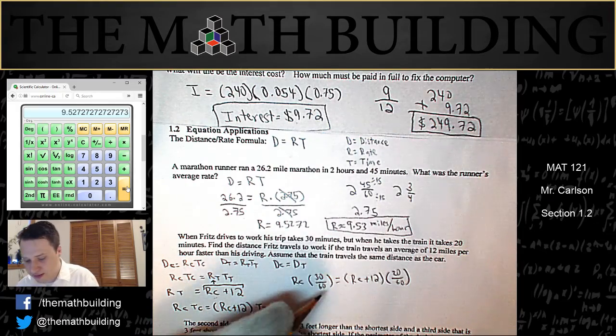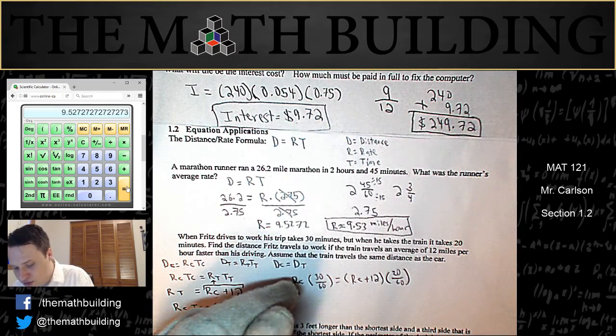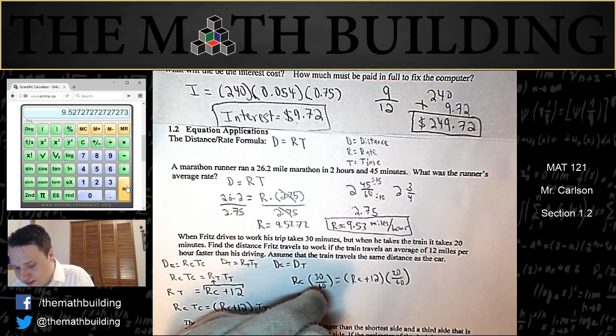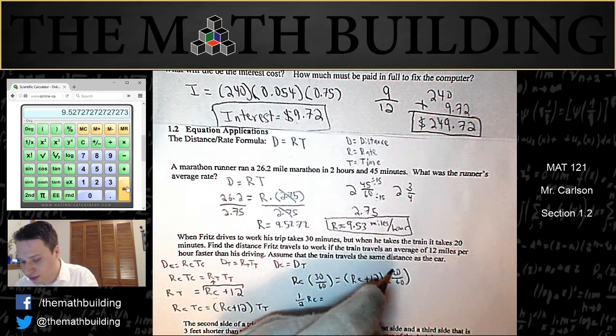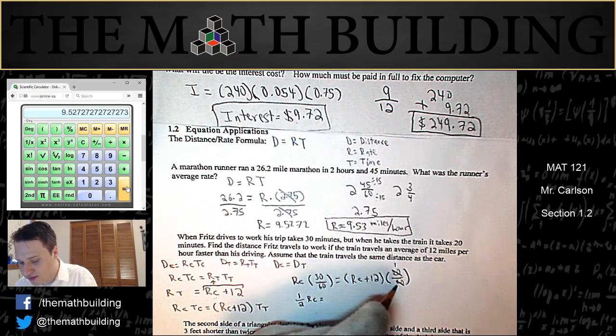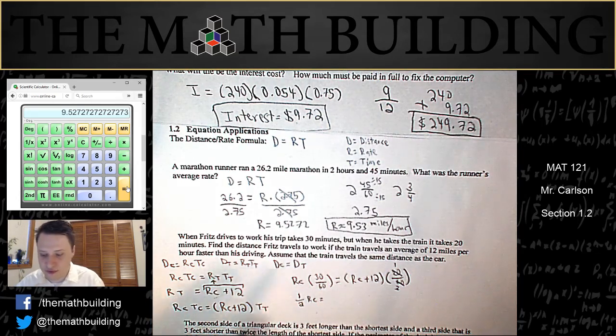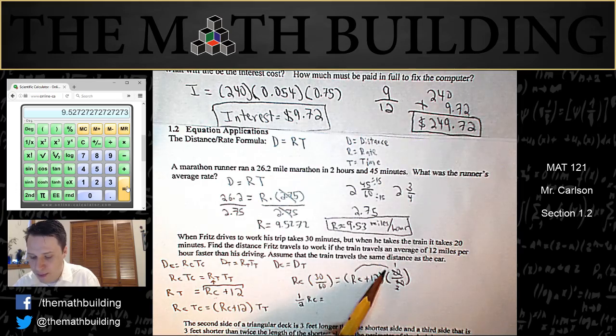So let's simplify this a bit. That 30 divided by 60 is the fraction of half. So I have a half times rc equals this fraction right here is a third because 20 goes into 20 once and it goes into 63 times. So let's actually do the distributive property with one-third.